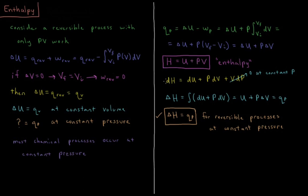The infinitesimal or the change in enthalpy during some small change in the state of the system, dH equals d quantity U plus PV. That's going to be dU plus d(PV). We use the product rule for this part, so that's PdV plus VdP. And if the pressure is constant, then VdP is zero.